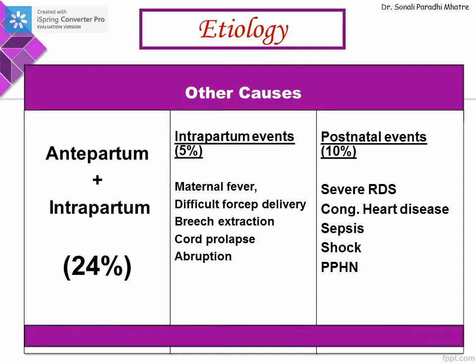Postnatal events comprise around 10% of etiological causes and include severe RDS, congenital heart disease, shock, persistent fetal circulation — that is PPHN — or sepsis.